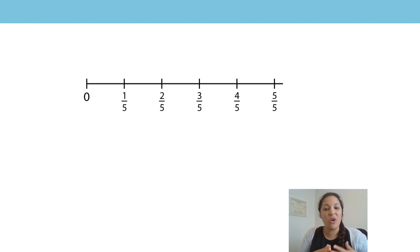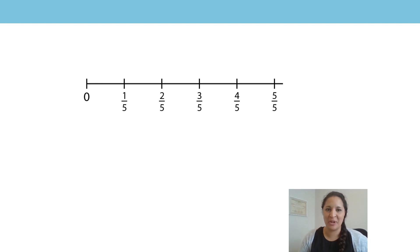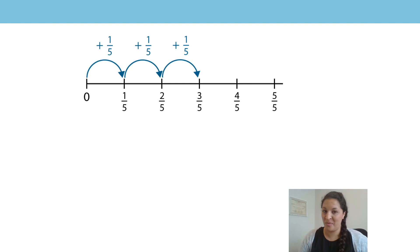Now let's look at this on a number line. My number line has been divided into five equal parts. I am going to count up in fifths starting at zero. Zero, one fifth, and another one fifth, and another one fifth. All together I have three fifths.